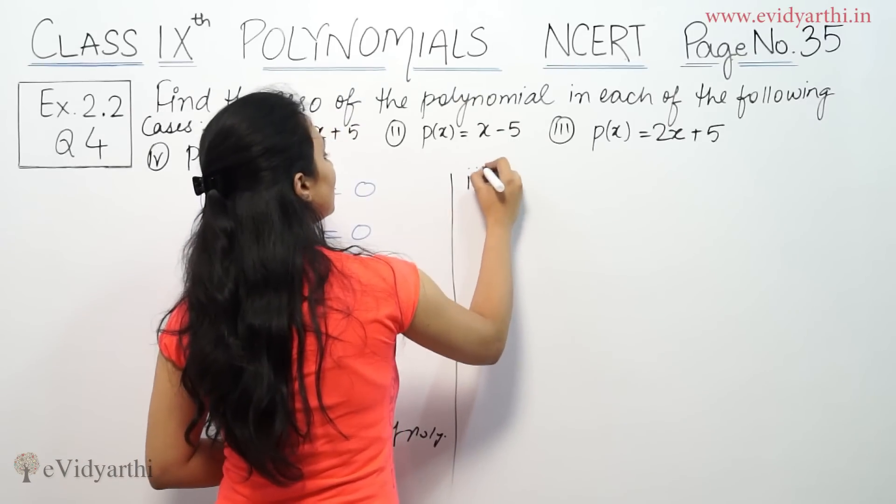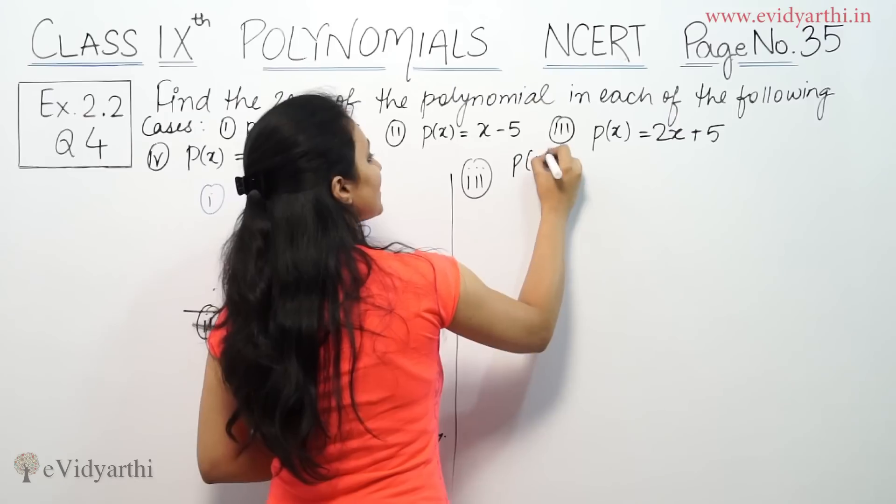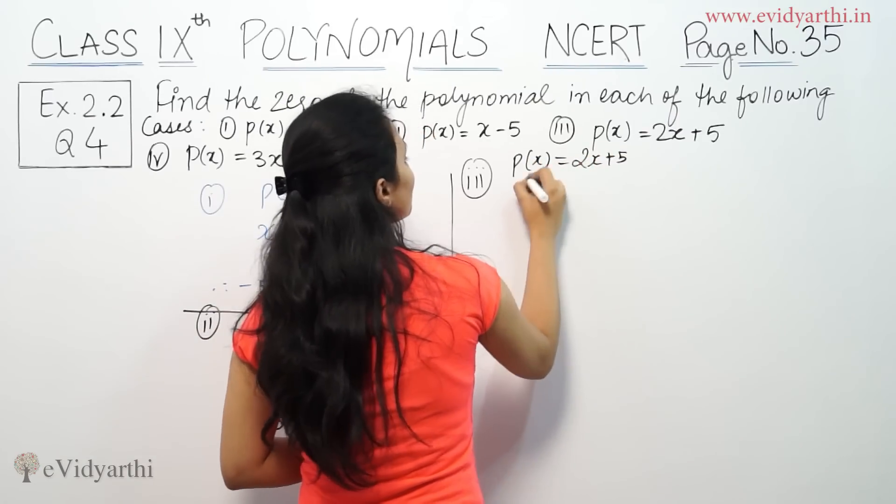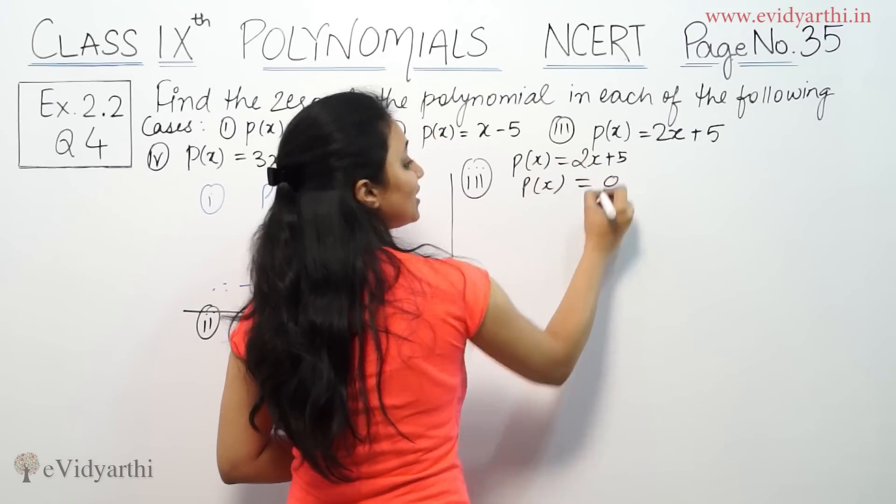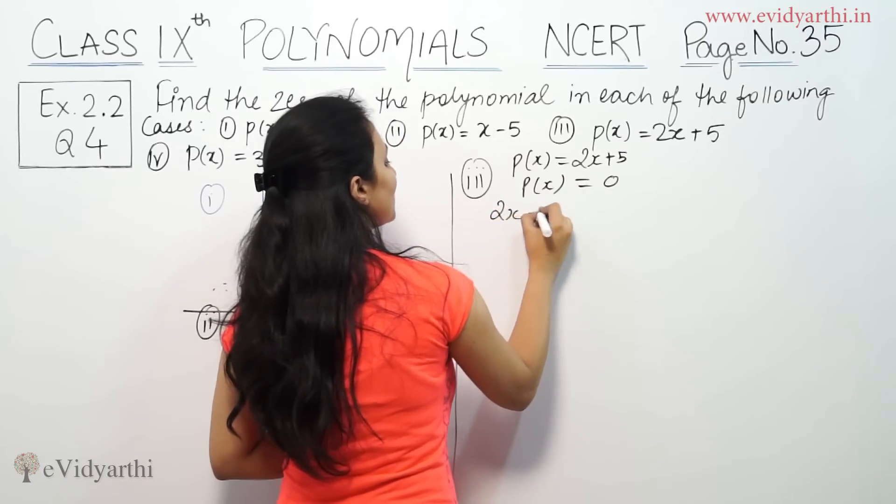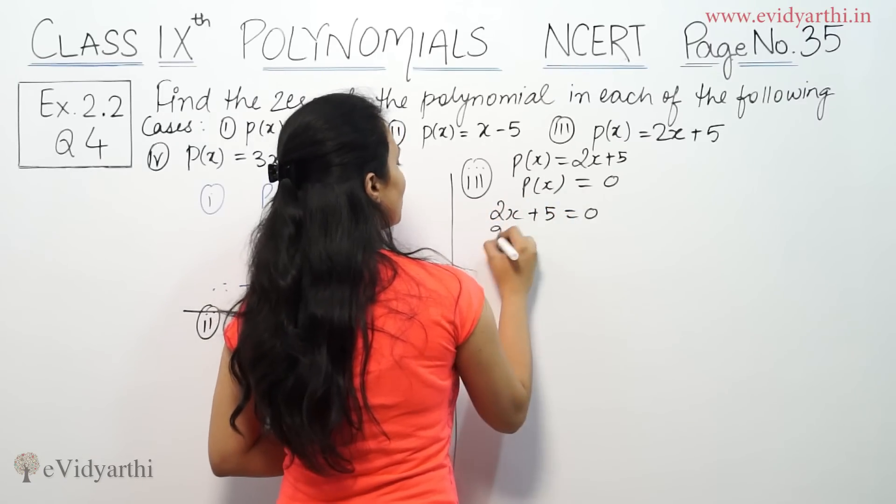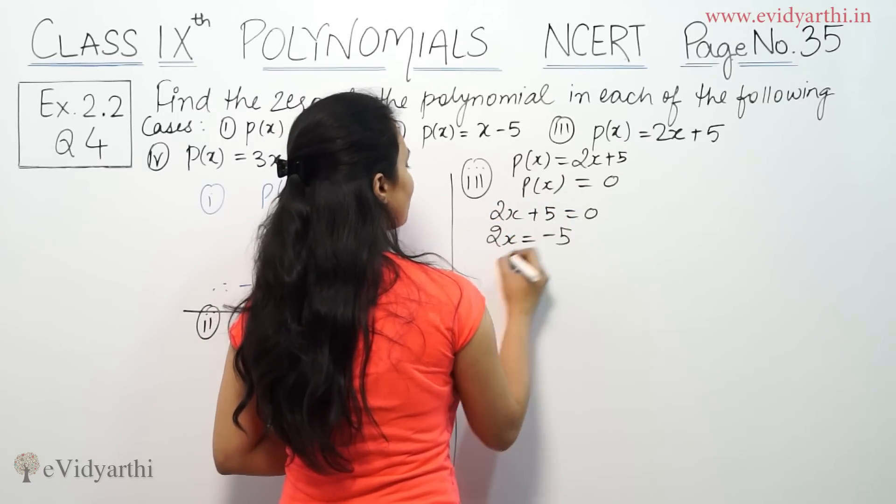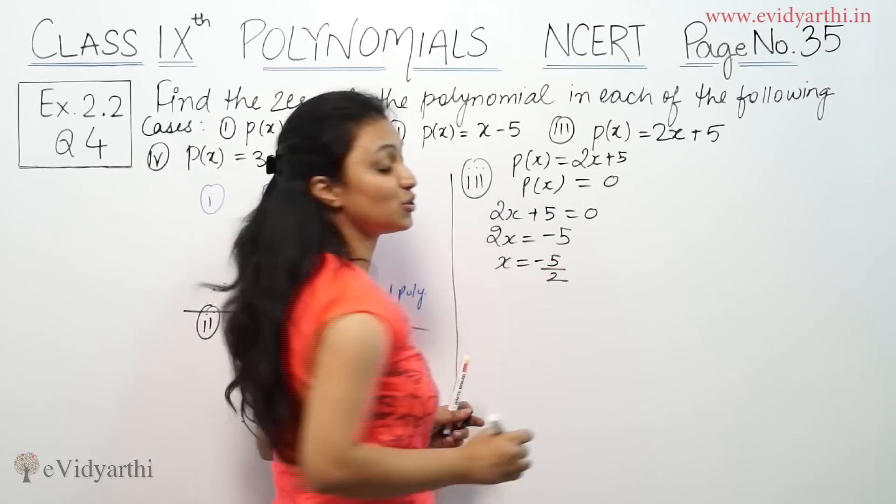Third part, p(x) equals 2x plus 5. To find the zero, p(x) is zero, that means 2x plus 5 is equal to 0. So, 2x is equal to minus 5, and x is minus 5 by 2.